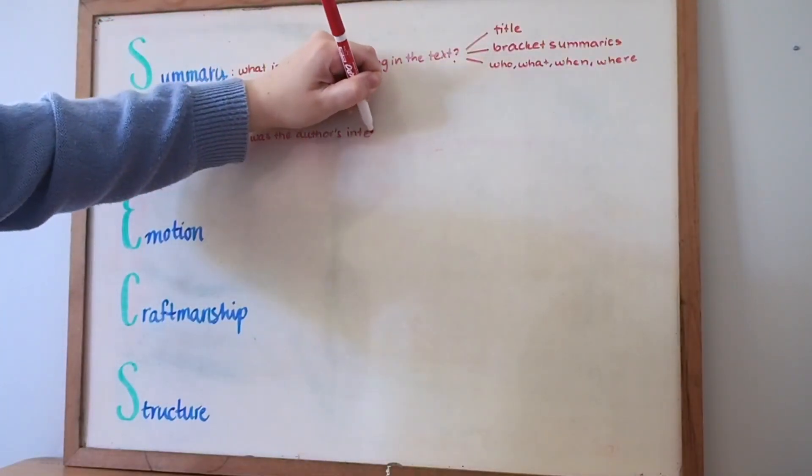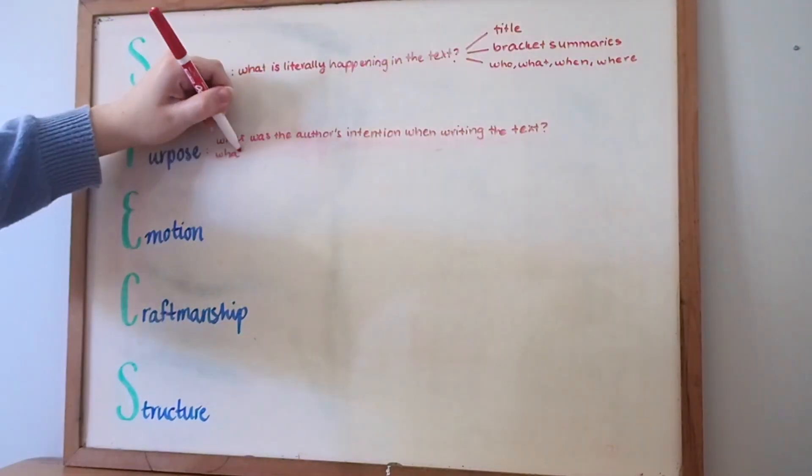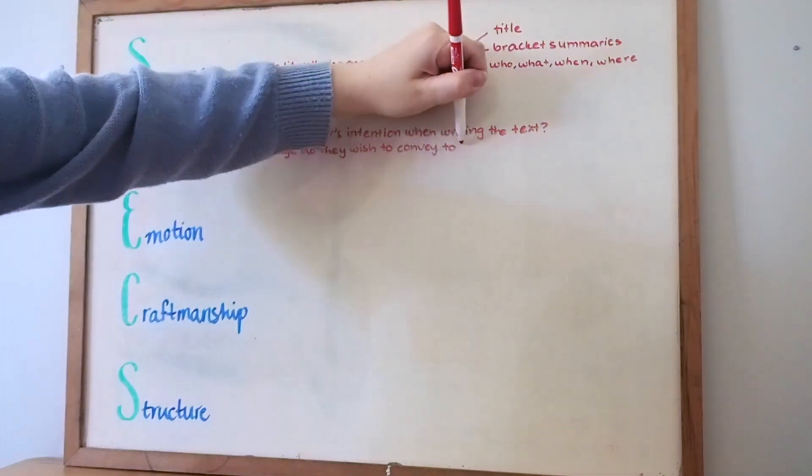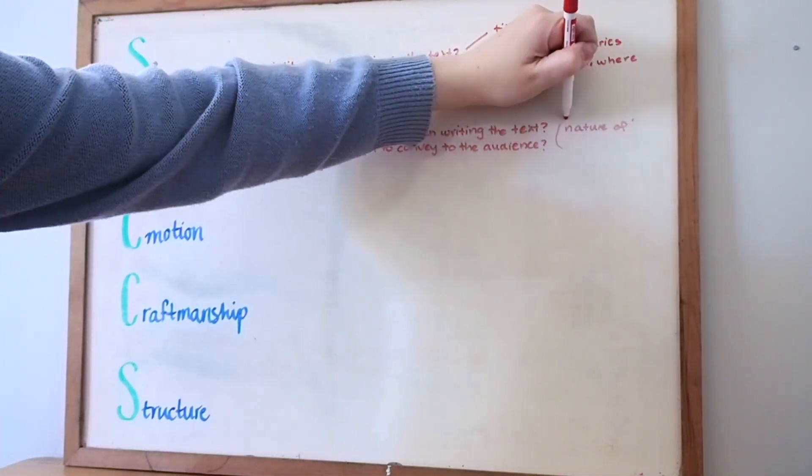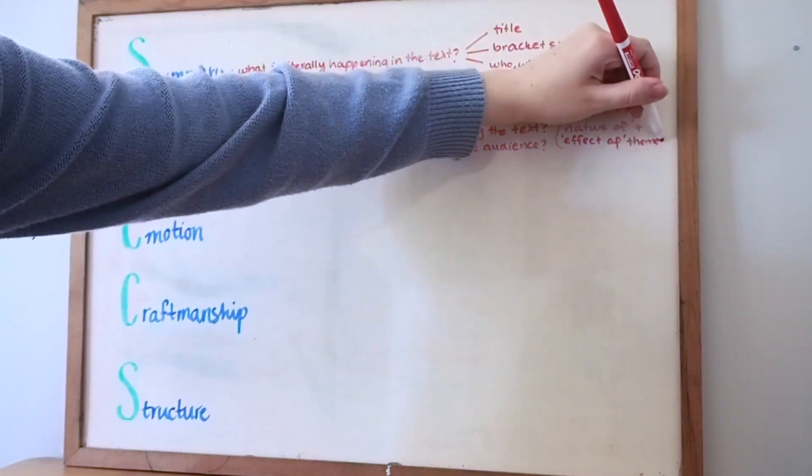Step two is purpose, and that refers to what the author's intention was when they were writing the text. These are basically your themes which will then come together to form your thesis. I covered my strategy of breaking these themes into nature of and effect of themes in the previous video.